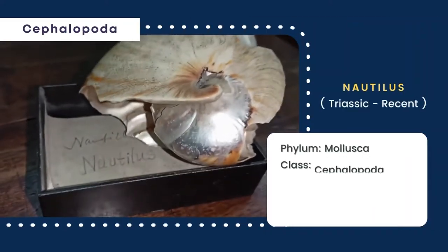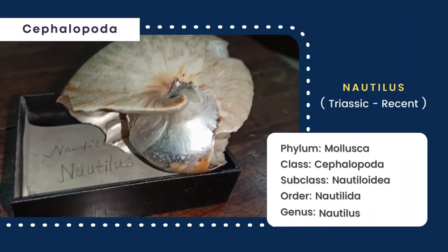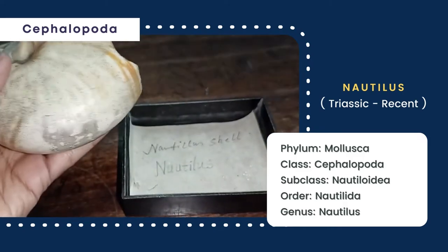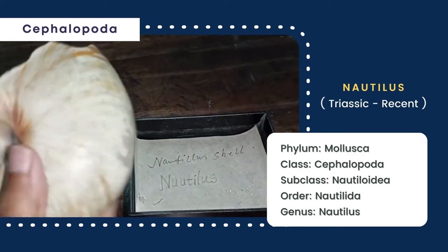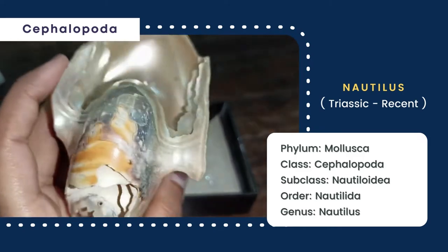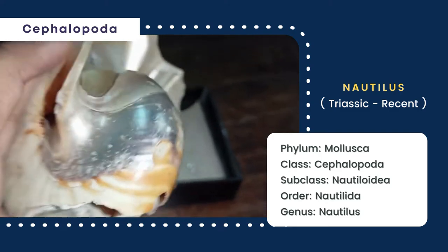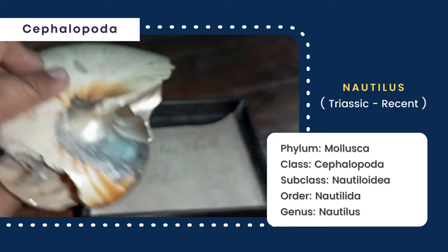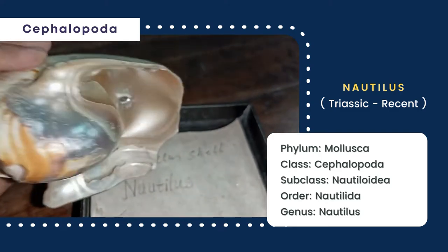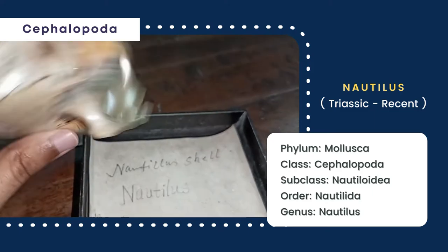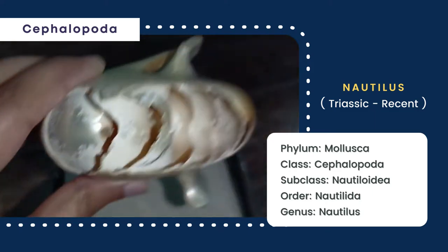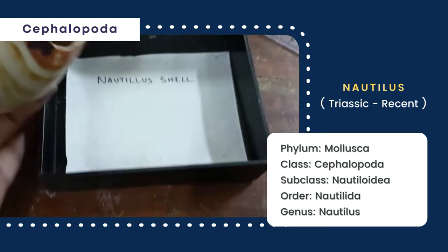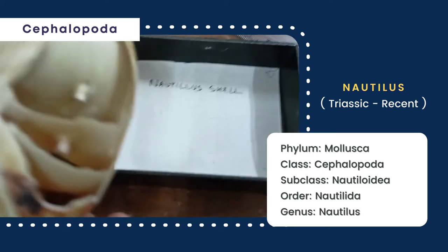Now you can see the nautilus, whose shell is rounded, thick, and contains many chambers. The shell is planispirally coiled and involuted around a white umbilicus. Each chamber is larger than the previous one, and the aperture is large and simple.